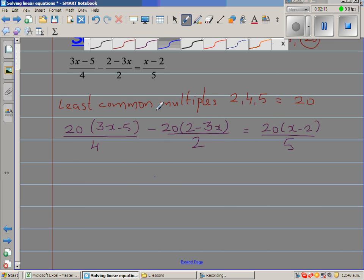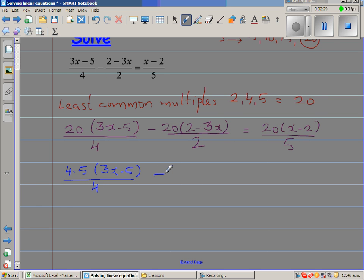The next step, of course, some of you may find it too easy. So I am going to write this 20 as 4 times 5, so this is 4 times 5 times 3x minus 5 over 4 minus. This 20 I am going to write as 2 times 10. I hope you can see why I am doing that over 2 and this 20 I am going to write as 4 times 5.